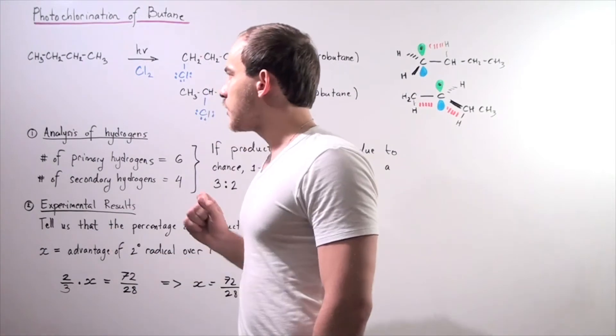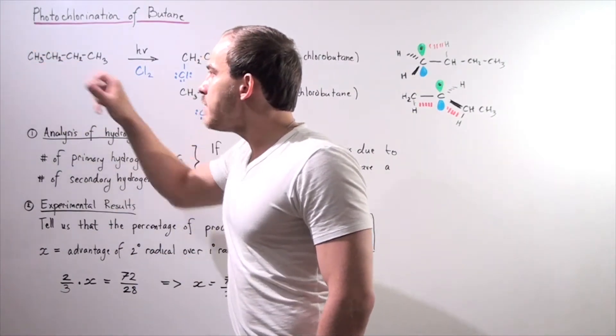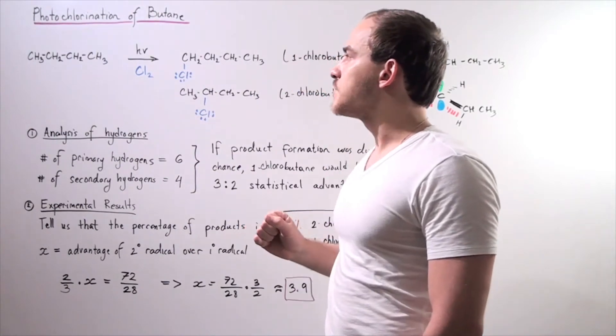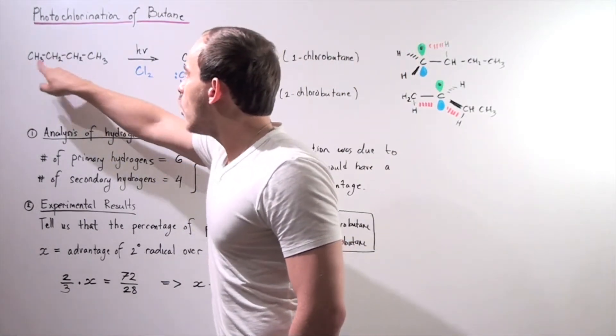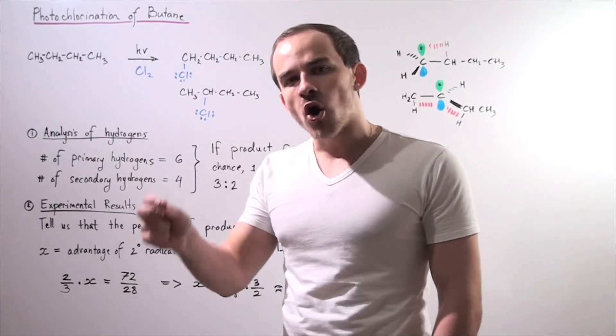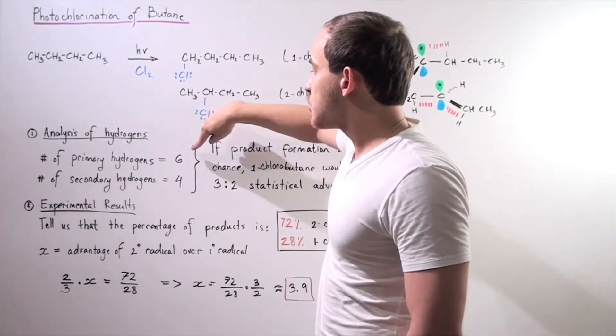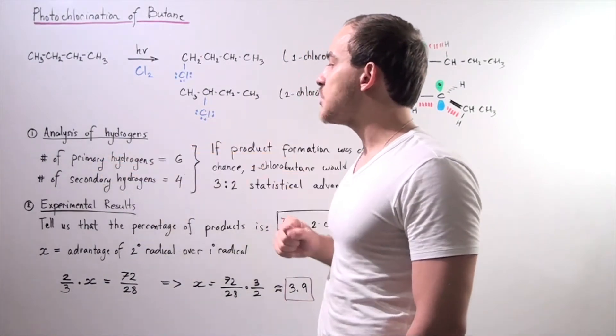Notice the number of H atoms, the primary H atoms is more than the secondary H atoms. More specifically, we have two primary carbons and each carbon has three H atoms, so that means we have a total of six primary H atoms.